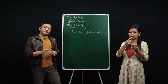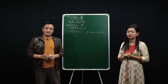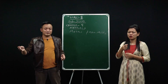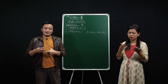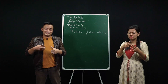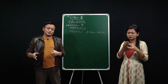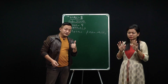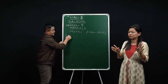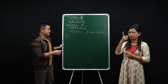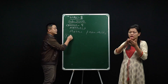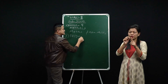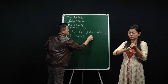Dear students, can you differentiate between metals and non-metals? You can randomly say that this is metal, this is not a metal. But there is a proper, scientific way to differentiate metals and non-metals. So the first thing is physical property — through physical property we can differentiate metals and non-metals.